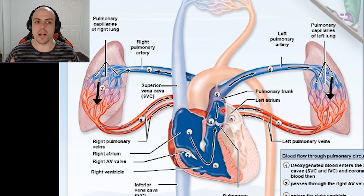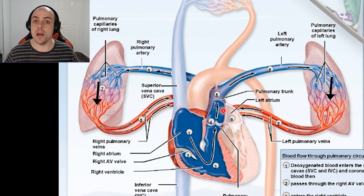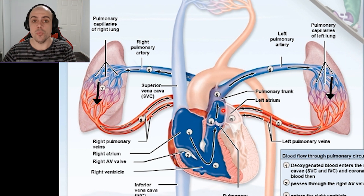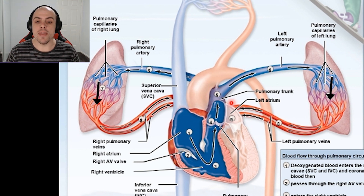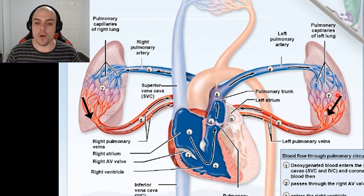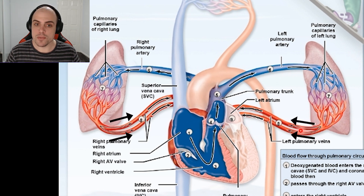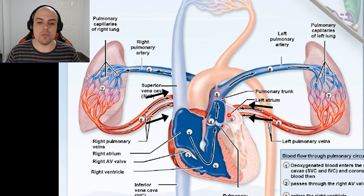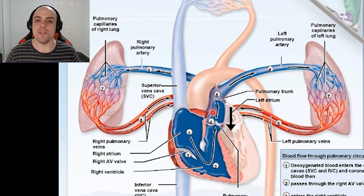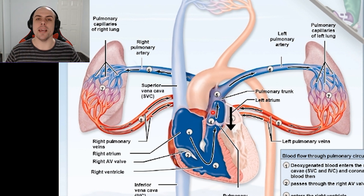From there, we see the pulmonary capillaries, where we exchange and release CO2 and accept oxygen. Then we move on into the pulmonary venules and pulmonary veins until it reaches the left atria. And from there, we begin the systemic circulation.